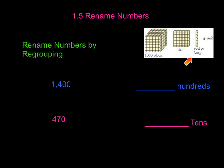We have a flat, which is made up of 10 rods or longs, which equals 100. And then we have a large cube or block that is made up of 10 flats, which equals 1,000.